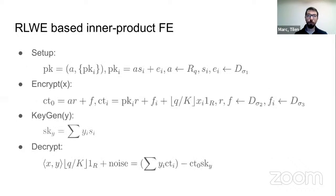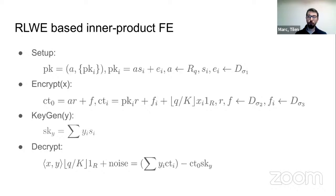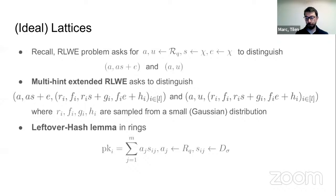To give a taste of our schemes: the main idea in inner product functional encryption is to construct them similarly to public key encryption schemes, but we want to encrypt vectors. We produce multiple public keys and encrypt each coordinate of a vector with a different public key, but with shared randomness across the encryption. This allows us to generate functional keys as linear combinations of secrets, which allow decryption of an inner product without revealing the message itself.